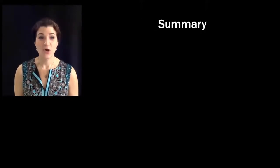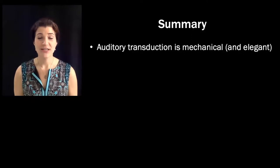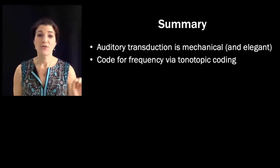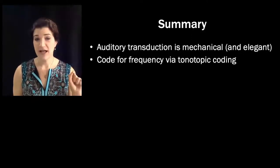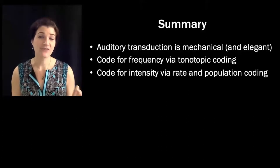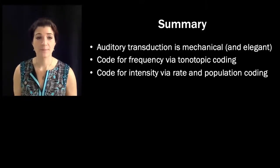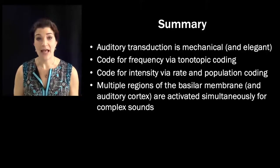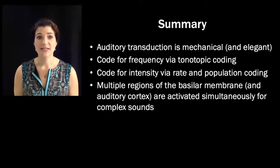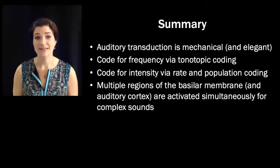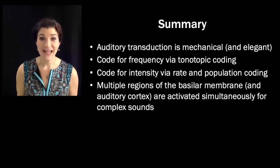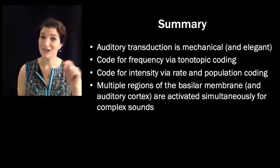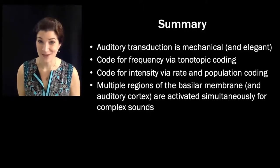To summarize: auditory transduction is mechanical and amazing. We code for frequency via tonotopic coding and intensity via rate and population coding. Multiple regions of the basilar membrane and auditory cortex are activated simultaneously for complex sounds. That is it for today — I look forward to seeing you in class and hearing more about what you think about this.